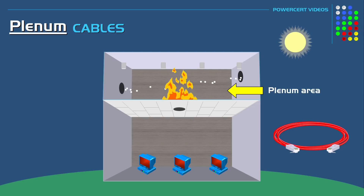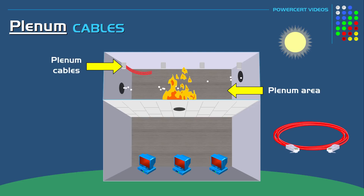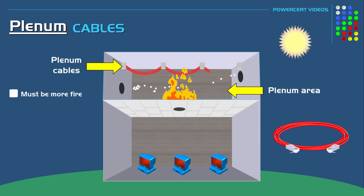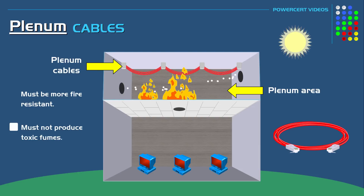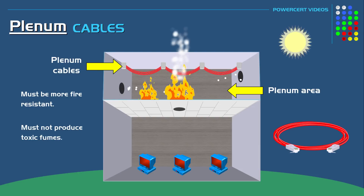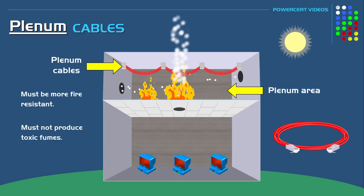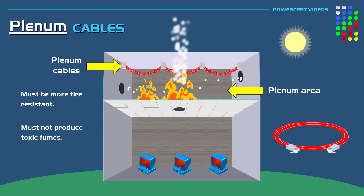Cables that run through these plenum spaces must meet certain requirements. First, the cable must be more fire resistant. And secondly, they must not produce any toxic fumes if they are burned, because toxic fumes in plenum areas can recirculate through the air conditioning systems and cause harm to humans. So in this environment, this is where plenum cables should be used.